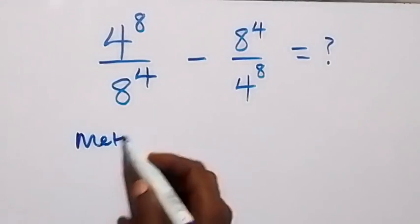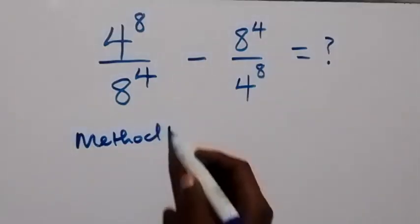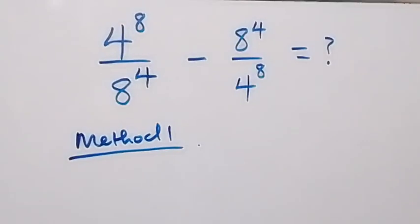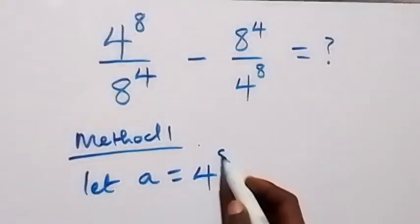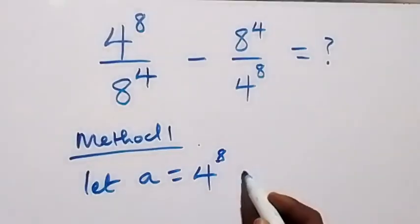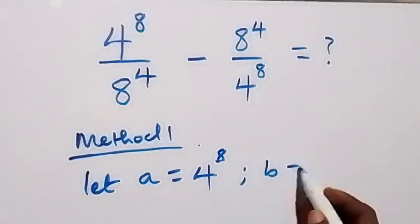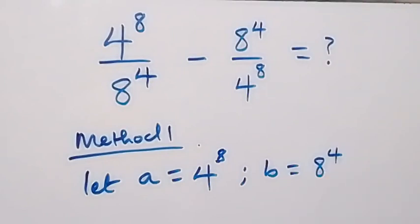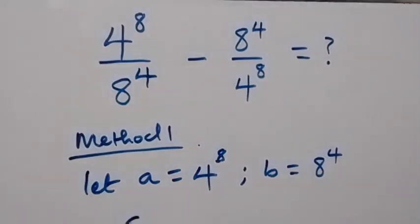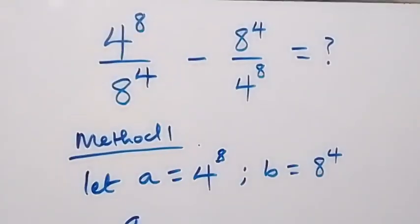The first method: let a be equal to 4 raised to power 8, and also let b be equal to 8 raised to power 4. What we have here will be written as a over b, then minus b over a.